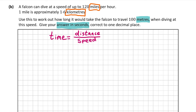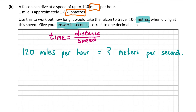The speed is the important thing here. We've been given 120 miles per hour, but we need it in meters per second. The first step is to work out how many miles per second that is. There are 60 minutes in an hour and 60 seconds in a minute, so if I divide 120 by 60 and then by 60 again, that gives miles per second. 120 ÷ 60 = 2, and 2 ÷ 60 = 1/30.